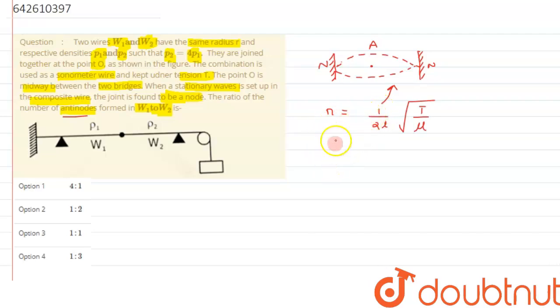In the next case we can say when there are two loops formed, we have to just multiply it with two. When three loops are formed, just multiply it with three. So we can generalize this, we can write P over 2L under root of T by mu. So P is the number of loops over here.